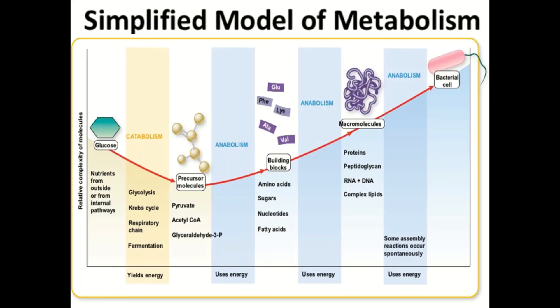This is a simplified model of metabolism. Here, glucose is turned into precursor molecules through the process of catabolism, through the process of glycolysis and the Krebs cycle in the respiration process. Simpler molecules like pyruvate and acetyl-CoA are formed through the process of catabolism, and this yields a lot of energy which is used in the anabolism process.